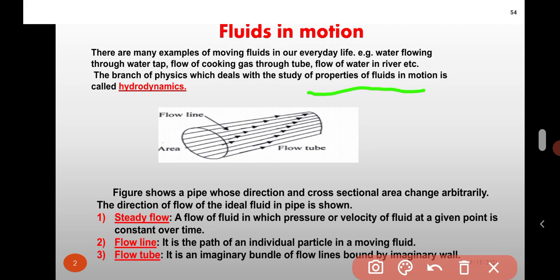Second one is flow line. It is the path of an individual particle in a moving fluid.